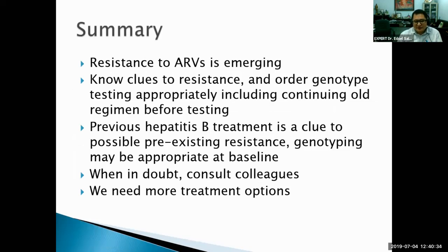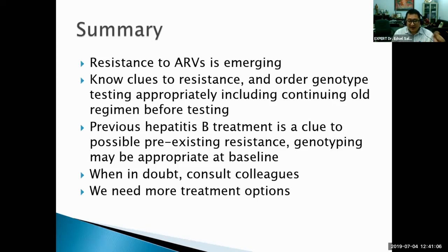In summary: resistance to ARVs is emerging. Know the clues to resistance and use genotyping tests appropriately, including continuing old regimens before testing. If a patient had previous hepatitis B treatment, consider possible pre-existing resistance — genotyping may be appropriate at baseline. When switching patients off failing regimens who have hepatitis B, do not remove tenofovir. Consult colleagues when in doubt — this is a collegial community — and hopefully we'll get access to dolutegravir soon for better treatment options.